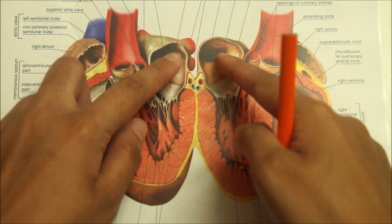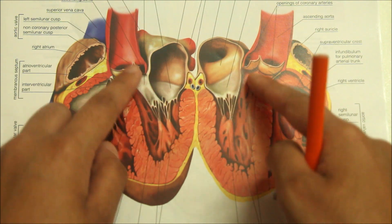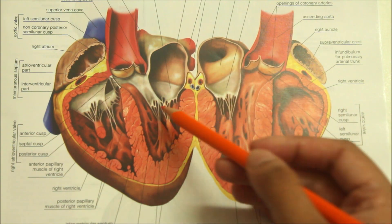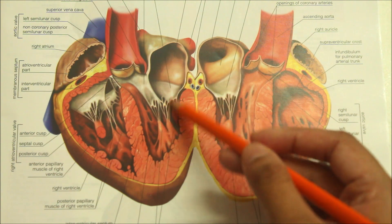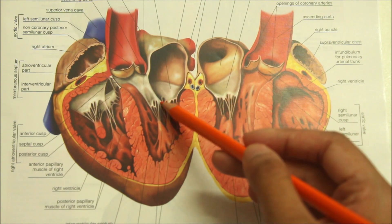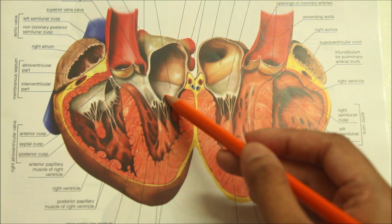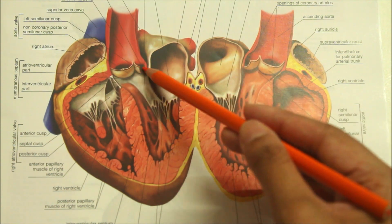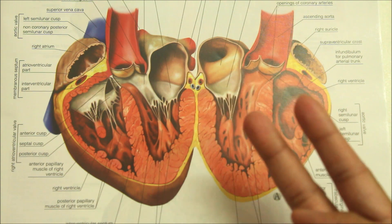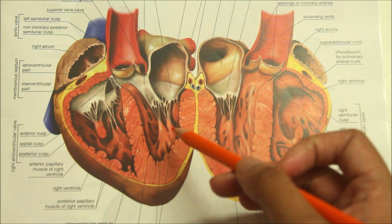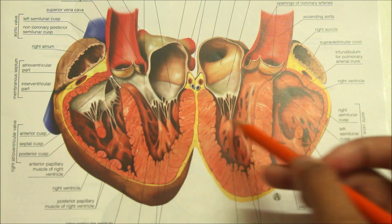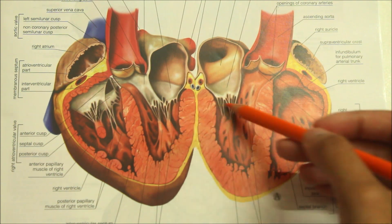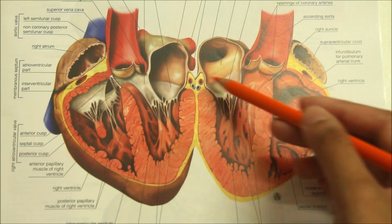The interior of the ventricle shows two orifices: first, the left atrioventricular or bicuspid orifice, guarded by the mitral or bicuspid valve; and the aortic orifice, guarded by the aortic valve. There are two well-developed papillary muscles — the posterior papillary muscle and the anterior papillary muscle. The chordae tendineae from both muscles are attached to both cusps of the mitral valve.